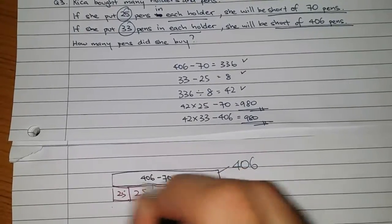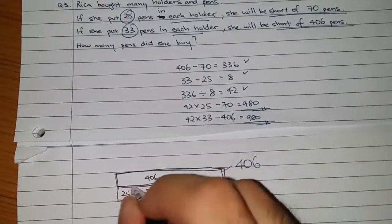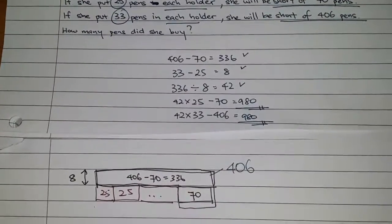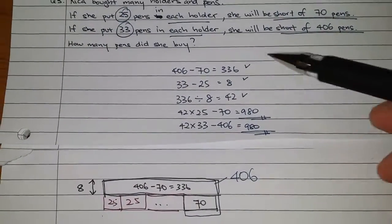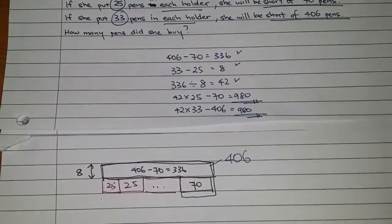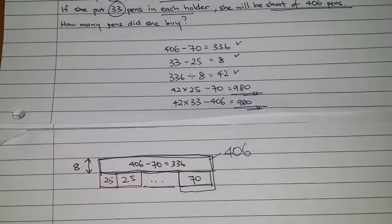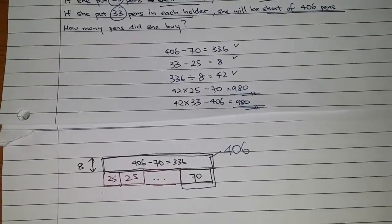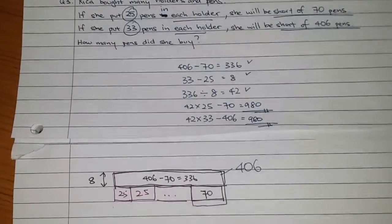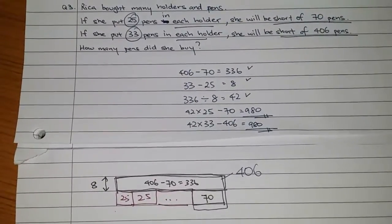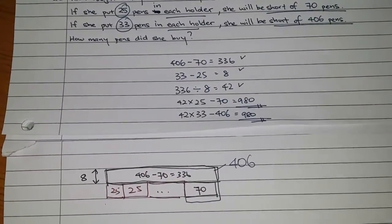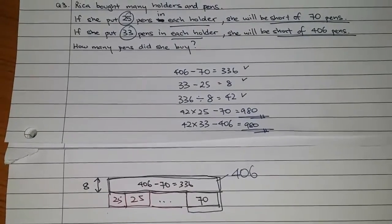Okay, 336 pens is the above portion. For this amount of pens to top up by, it reaches 33 minus 25. So, 336 is why we minus, okay? And then 33 minus 25 is each each, and that's how we get the answer 42 for the holder. So, number of holders times 25, okay? I'm short of 70, so I need to minus that. And if I want to have 33 pens in each holder, 42 times 33, alright? And then I need to minus 406 to get 980 pens as well.